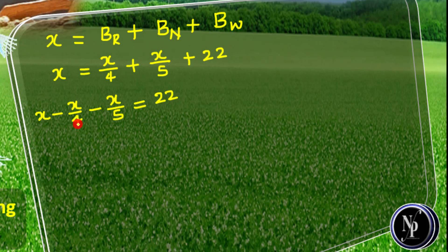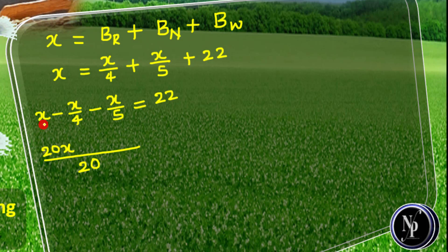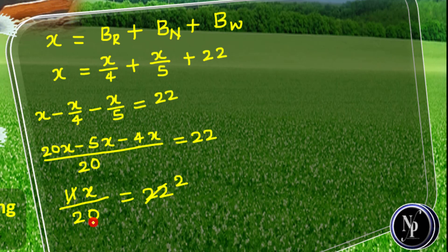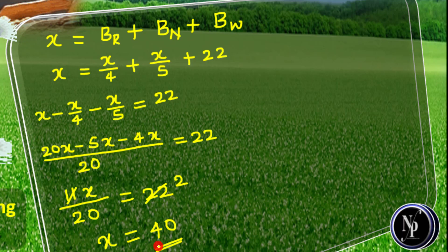Let us simplify. The LCM of 4 and 5 is 20. So in the denominator we have 20. In the numerator: 20x minus 5x minus 4x, which equals 11x. So 11x divided by 20 is equal to 22. Since 11 twos are 22, taking 20 to the right-hand side: x is equal to 2 into 20, which is 40. The total number of birds in the flock is equal to 40.